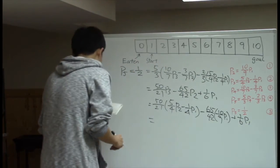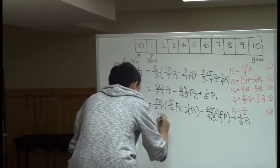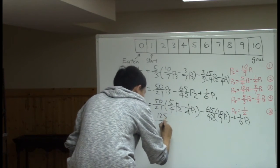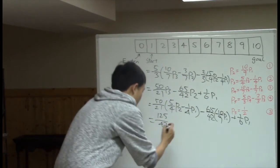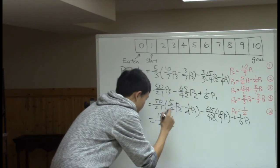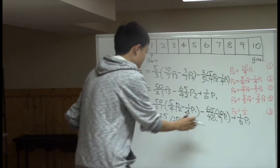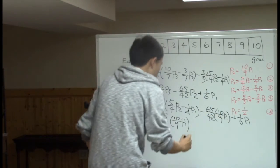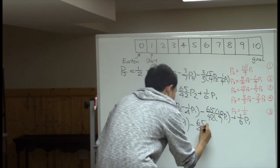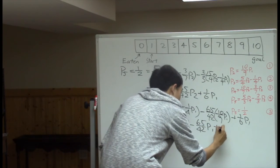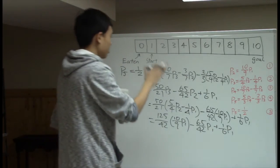And what we get is 125/42 p2. And again, we use equation number 1. So that becomes this, instead of p2, we use 10/9 p1. Right? And these stuff left are p1s. So minus 65/42 p1 plus 1/6 p1. And then, now, everything is p1.